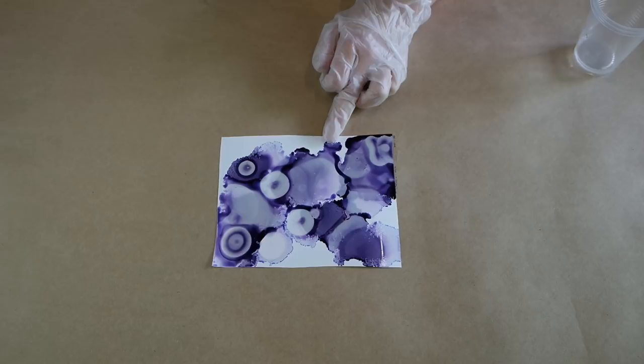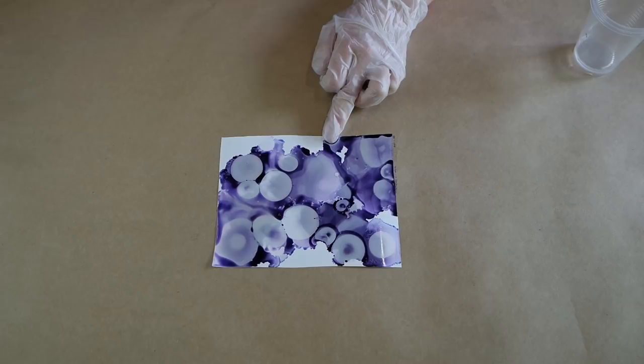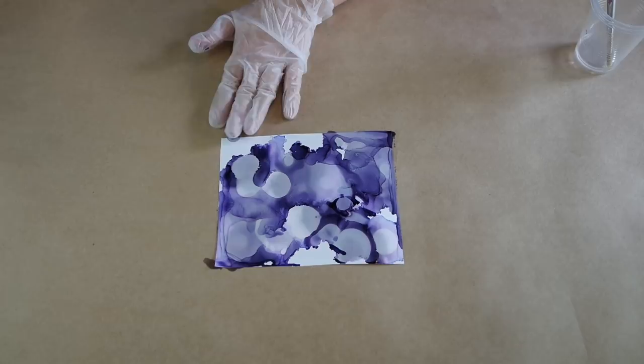The paper that I'm using is yupo paper, and I do really recommend it when you work with your alcohol inks. Because it's a plastic-based paper, it stops the alcohol in the inks from seeping through to the other side.